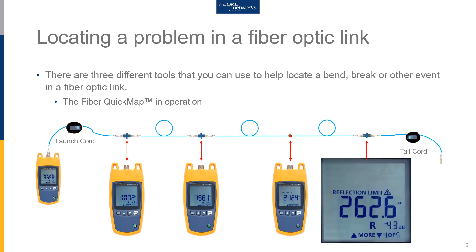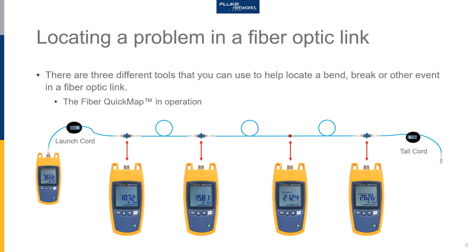Finally, at 263 meters, I have the fourth event. Because I've got a tail cord on the end, I know this is the last connector on the link I am measuring. I've got a reflection limit alarm showing here — it's a reflective event, a connector. But it is at minus 43 dB. I set my limit at minus 45 plus or minus 1 dB, so this is indicating that at 263 meters I have a dirty connector.